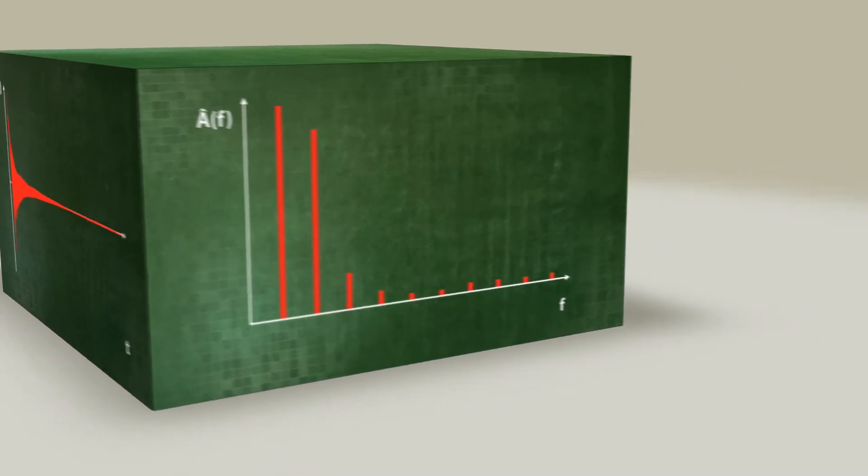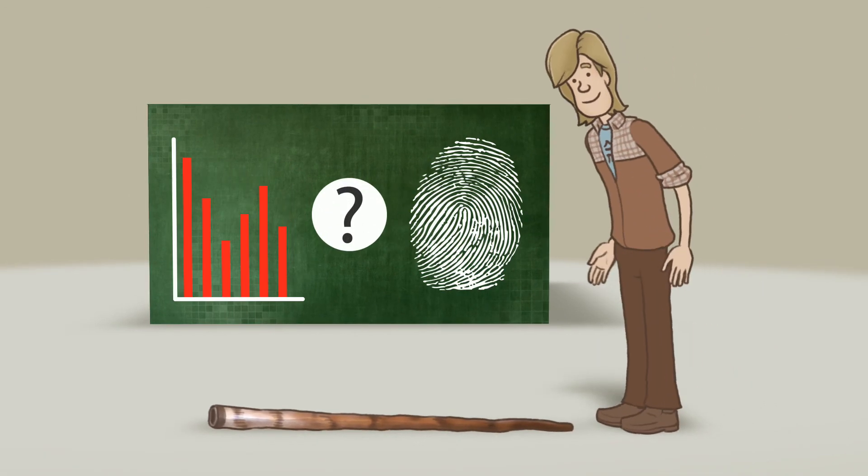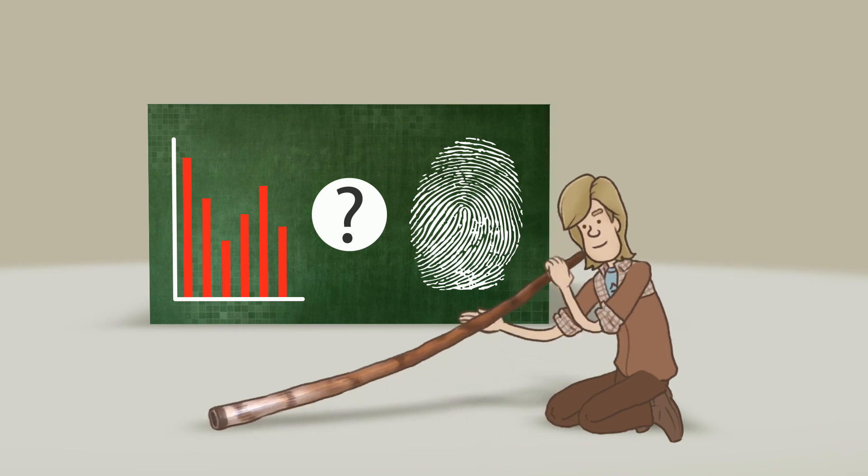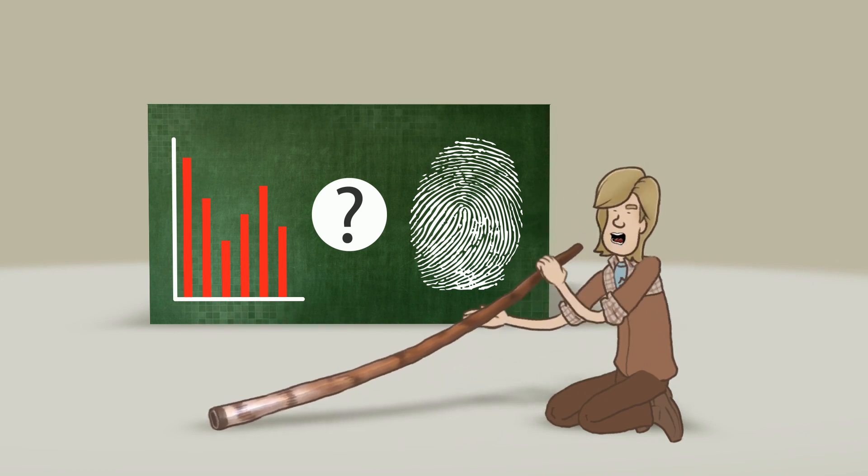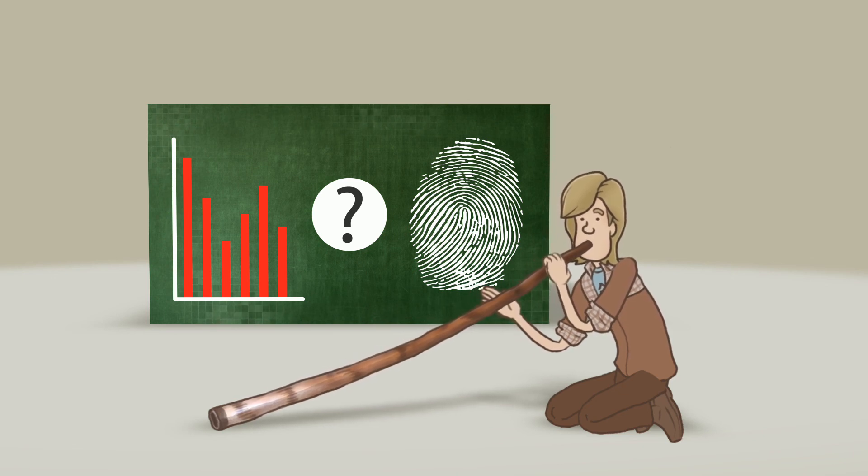Let us return to the issue of unambiguity. Is it possible to infer the sound source from the sound wave? Is the frequency spectrum a unique fingerprint for the musical instrument used? We shall answer this question in the next station.